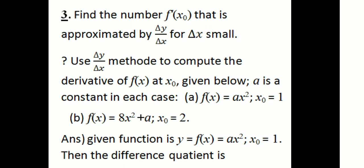We have done the steps in the class. Use delta y by delta x to compute the derivative of f of x at the point x noted below. A is a constant in each case. Delta y by delta x is done with the difference quotient, that is delta x approaching 0, and then we have done the derivative.